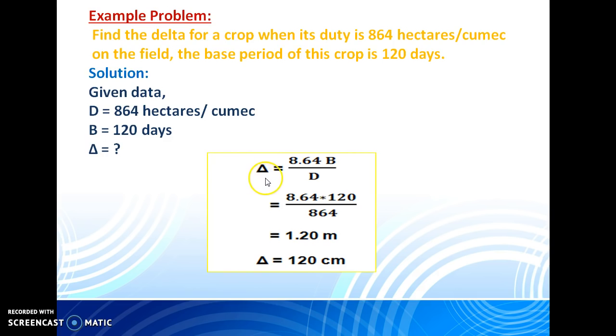We know the relation between delta, B, and D. Delta equals 8.64 B by D. Substituting the values of B and D in this equation: 8.64 times 120 divided by 864. By solving this, we can get delta equals 1.20 meters. Generally, the delta value, we represent in terms of centimeters. If we convert these meters into centimeters, then delta becomes 120 centimeters. So, the delta equals 120 centimeters.